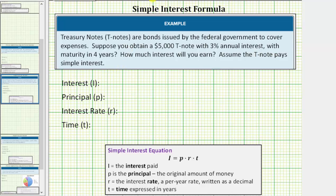We'll be solving this problem using the simple interest formula shown below: I equals P times R times T, where I is the interest paid.